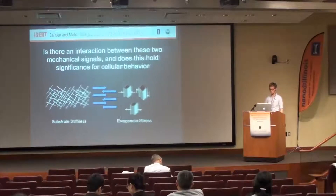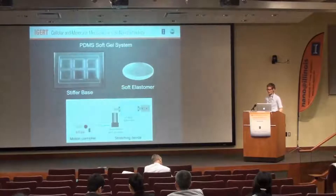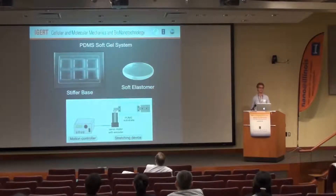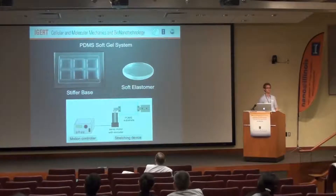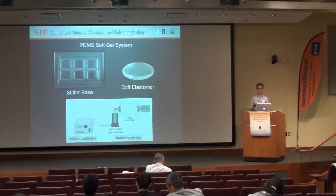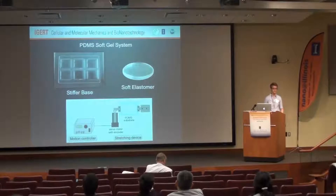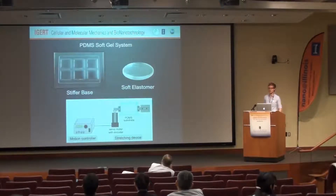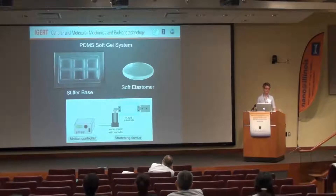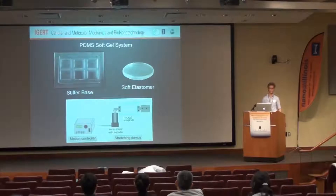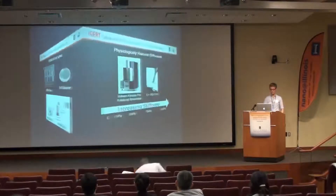The challenge was really just establishing this system. A lot of groups have tried to do it and it's really difficult to get soft substrates to deform and strain. We decided to try a simple way — taking PDMS at different ratios and casting them directly into a base and then cyclically straining that. There was no gluing; it was really just casting the gels directly into the base.